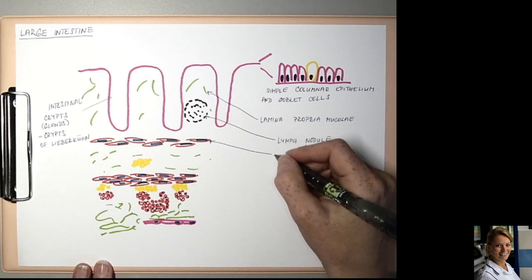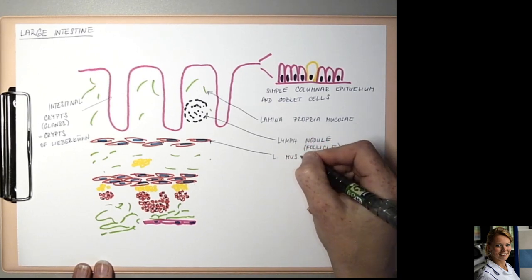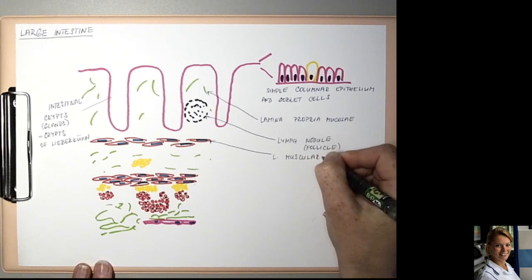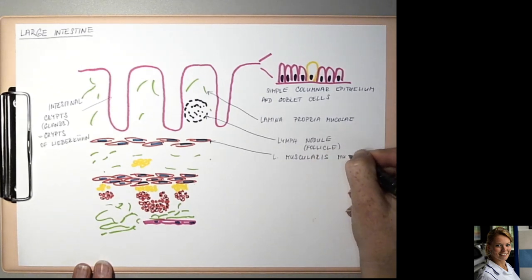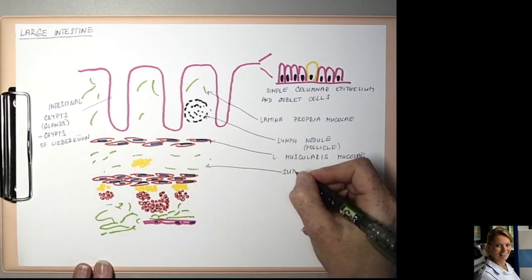Next layer is lamina muscularis mucosa. Next layer is submucosa.